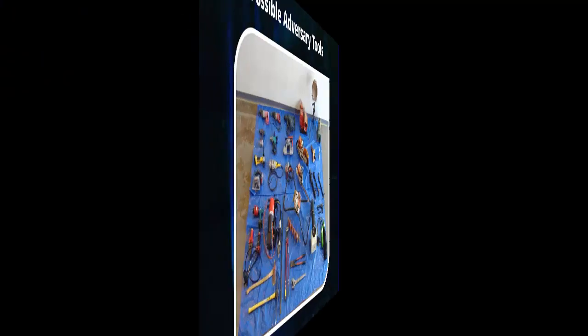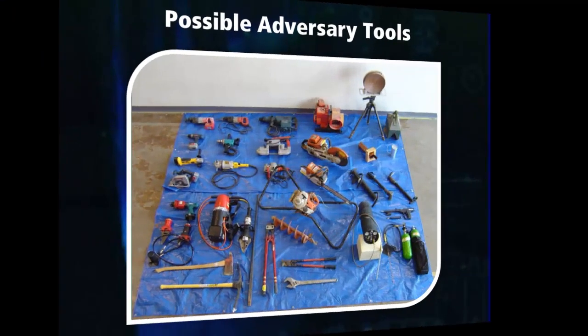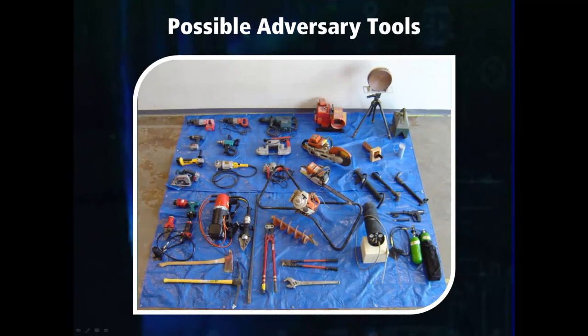This picture shows a variety of tools that might be useful to an adversary planning to break into a facility. Many of these tools are available at typical hardware stores, such as axes, pry bars, bolt cutters, saws, cutting torches, and hydraulic jacks. All of these tools must be taken into account when analyzing the delay capabilities of a barrier because they are easily acquired by an adversary.